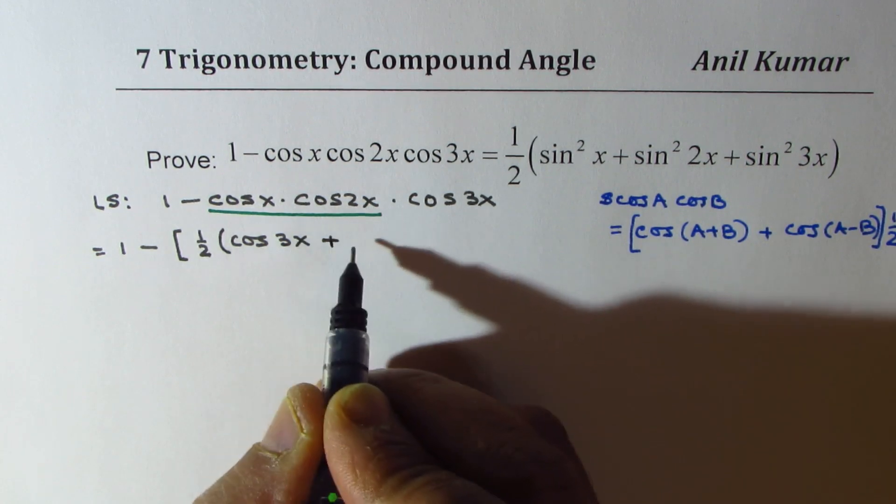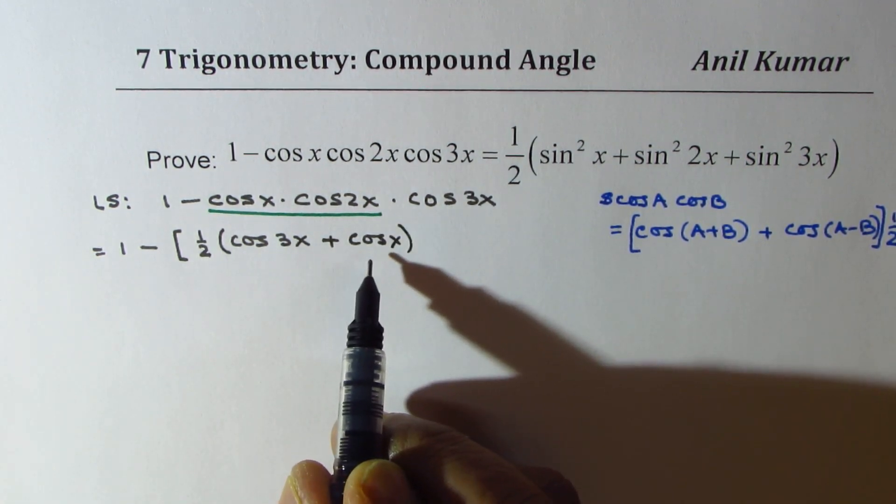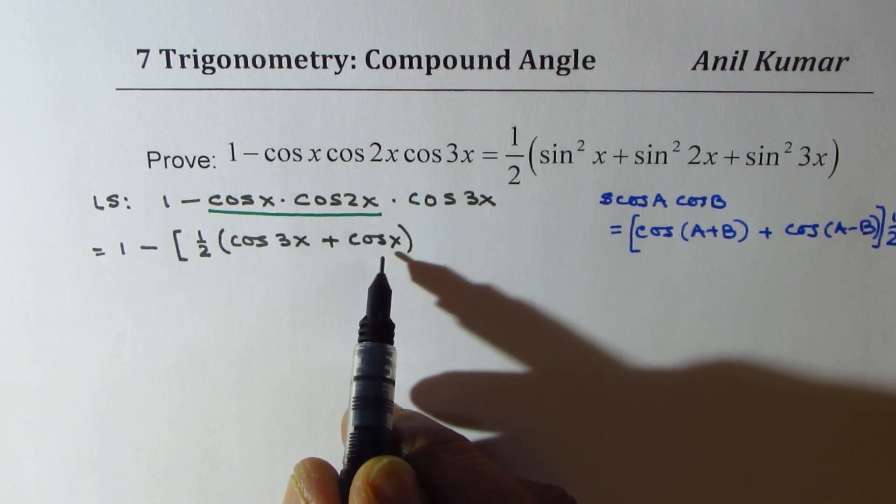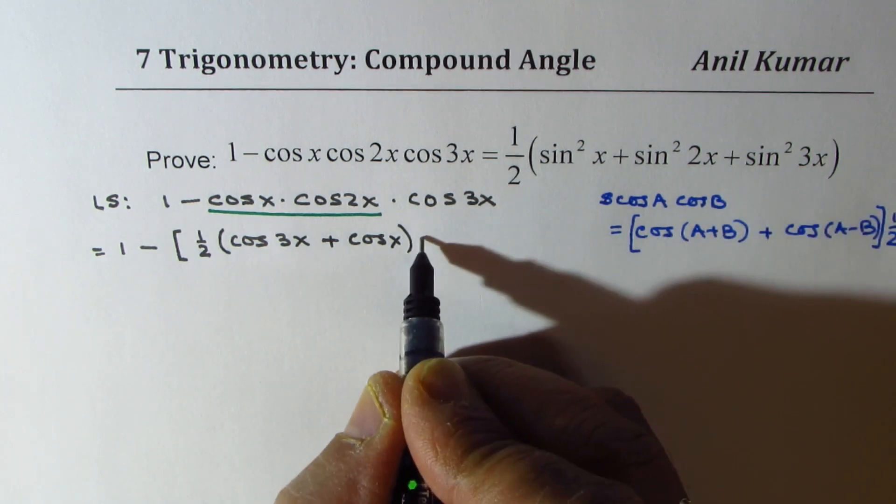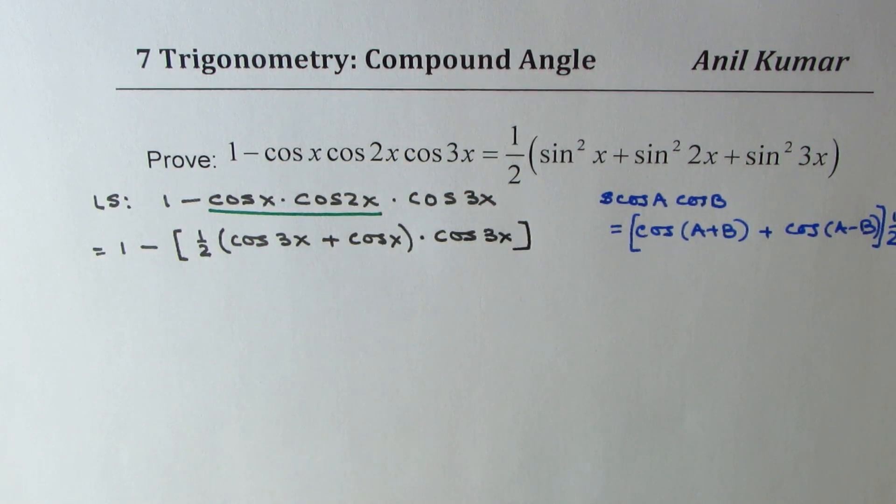Now, cos is an even function, so x minus 2x is minus x. We could write this as x, times cos 3x. So, I hope this step is clear. Now, let's open the bracket.